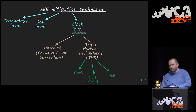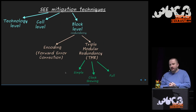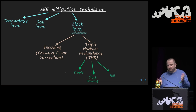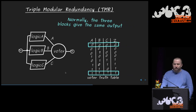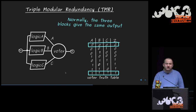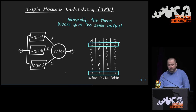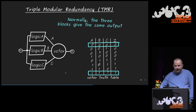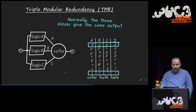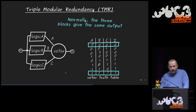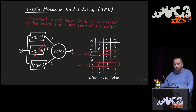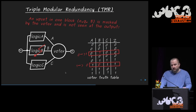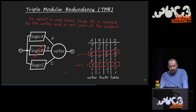Another approach is triple modular redundancy (TMR): instead of changing the design, you triplicate it and use a voter cell — a cell with an odd number of inputs whose output is always the majority of its inputs. With three circuits A, B, and C operating identically, an error in one is masked by the voter. However, simply triplicating the registers without feeding the voted output back into the logic means a second upset later can break the state irrecoverably.